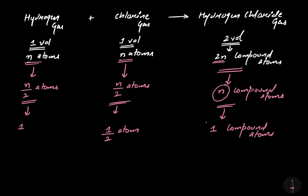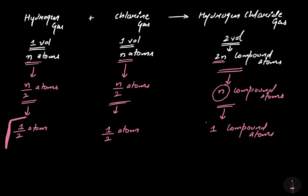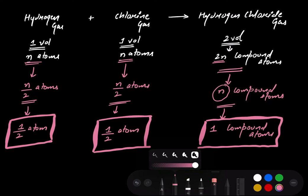So Berzelius hypothesis states — in this example — that half an atom of hydrogen combines with half an atom of chlorine to form one compound atom of hydrogen chloride gas. Hopefully you got this point. Berzelius hypothesis states that half atom of hydrogen gas combines with half atom of chlorine gas to form one compound atom of hydrogen chloride. Now this theory got failed.